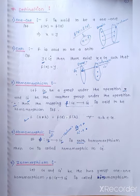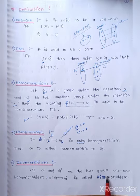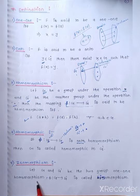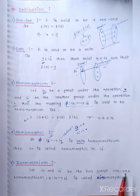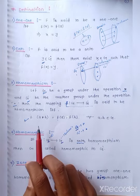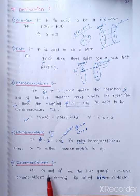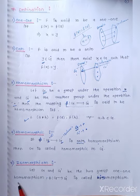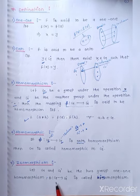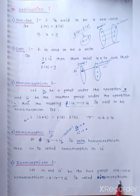Next definition is isomorphism. What is isomorphism? Let G and G dash be two groups. A mapping that is both one-one and a homomorphism — one-one means every element of the domain has a distinct image in the codomain, and homomorphism means the operation-preserving condition is satisfied. Then the mapping phi from G to G dash is called an isomorphism.